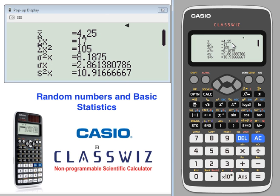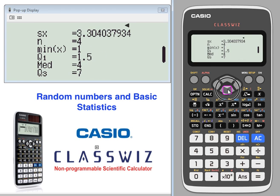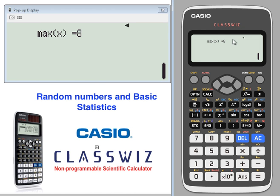You have the mean, the sum, the sum of the squares, the variance, standard deviation, minimum, number of values, median, quartile 1, quartile 3, and maximum.